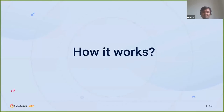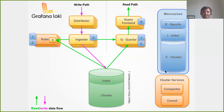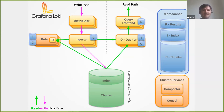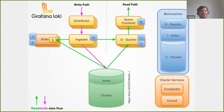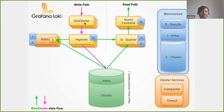Let's look at how Loki works. This is the architecture of Loki — you can see there's a read path and a write path. On the write path, there are multiple logging clients and an API for pushing logs to Loki. When logs come in, they first hit the distributor, which handles replication. There's a consistent hash ring running between distributor and ingestors, using which the distributor decides which ingestor the logs belong to.